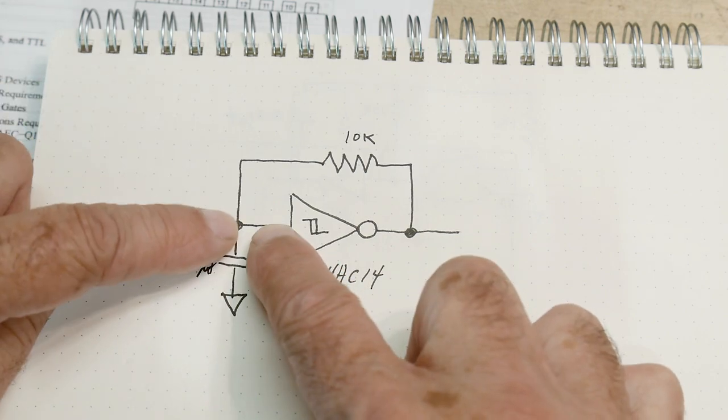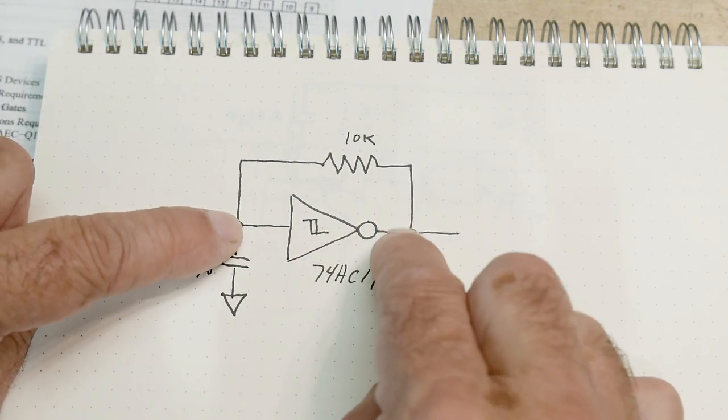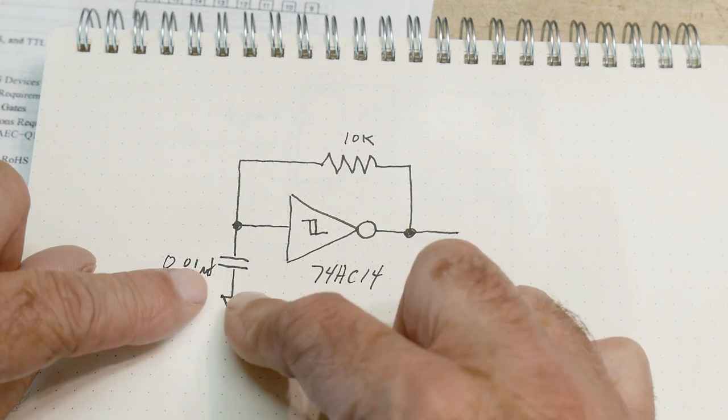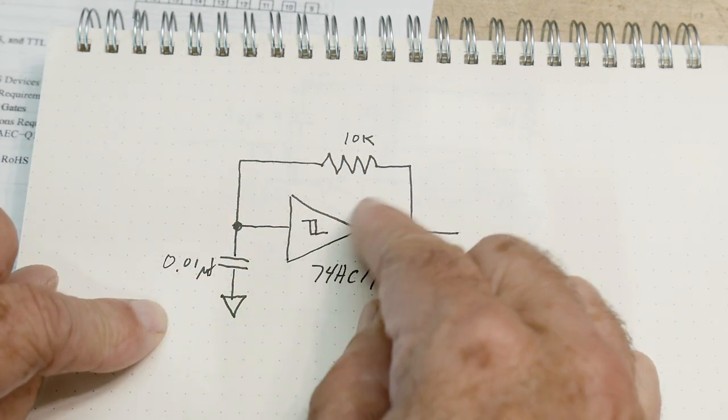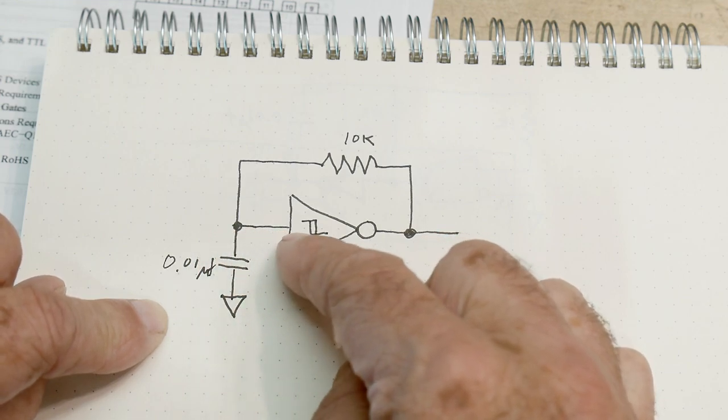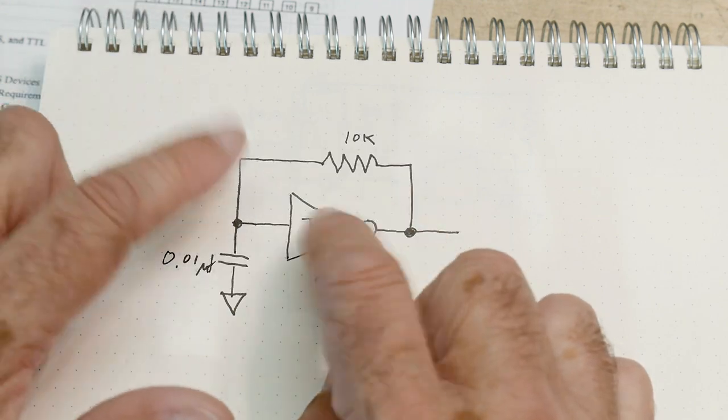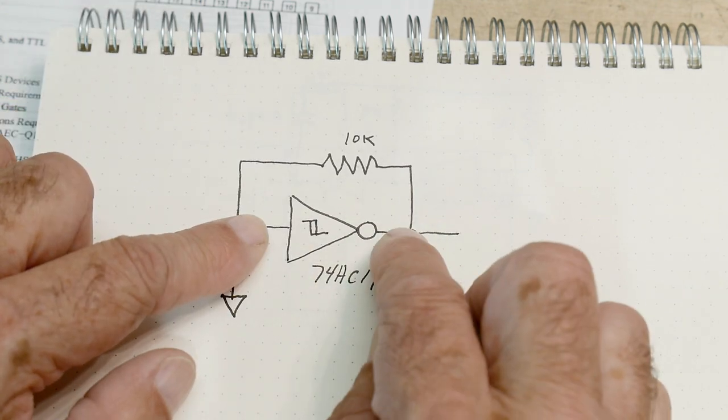So if the input is low, then the output is high. If the output is high, then you have a high voltage here and it will start charging this capacitor. When it finally gets to the threshold of this hysteresis comparator, then this thing will switch. This will become high and this will become low.